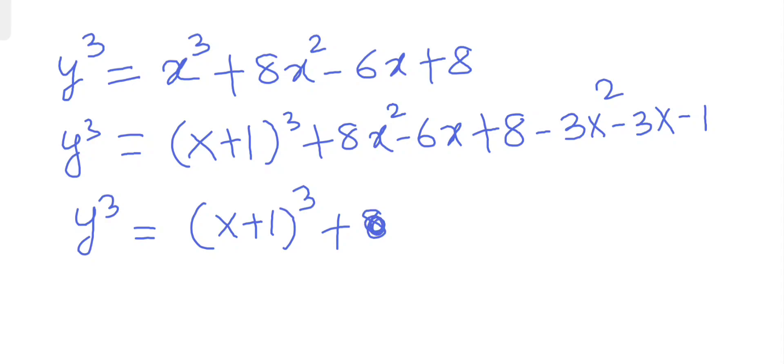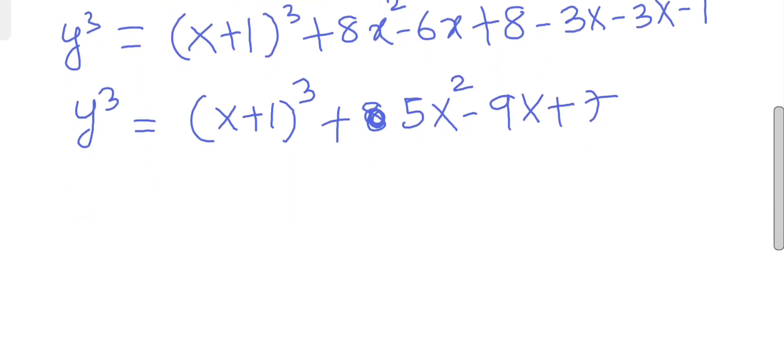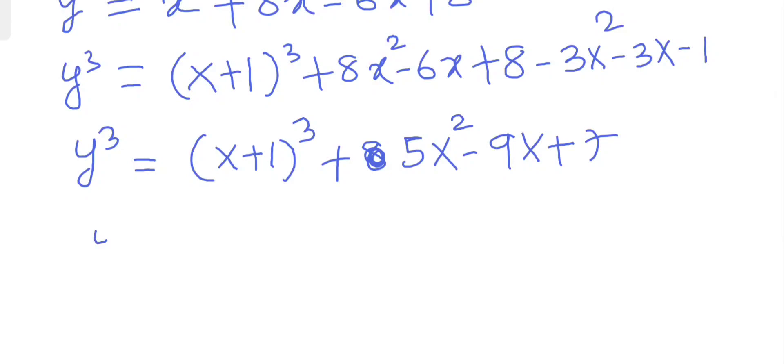I'll get 5x² minus 9x plus 7. Okay, so let's simplify this a bit. I can write y³ minus (x+1)³ equals 5x² minus 9x plus 7.